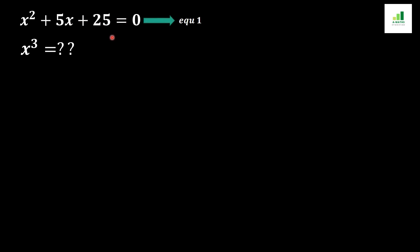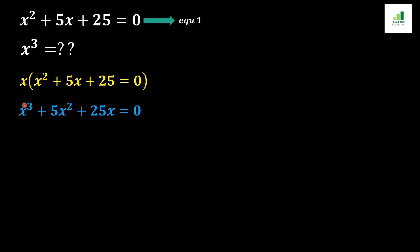To find the value of x cubed, we multiply both sides of equation 1 by x. After multiplying, we get x cubed plus 5x squared plus 25x equal to 0, because x times x squared gives x cubed, x times 5x gives 5x squared, and x times 25 gives 25x.